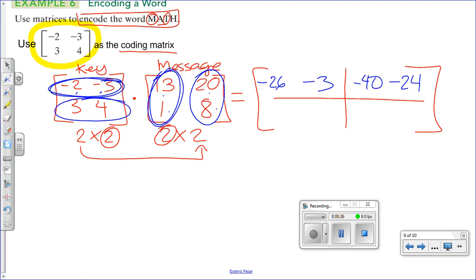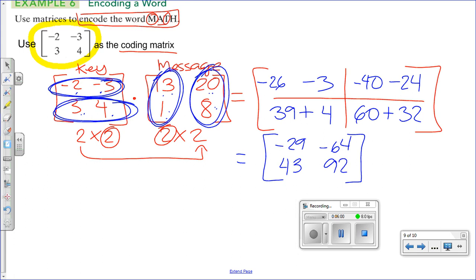Then, we move on to the second row. Second row, first column. 3 times 13 is 39, and then 4 times 1, that's 4. Then, we multiply second row, second column. So, 3 times 20 is 60, and then 4 times 8 is 32. So, then here, what we get is negative 29, negative 64, 43, and 92. This is like our secret or encoded message.